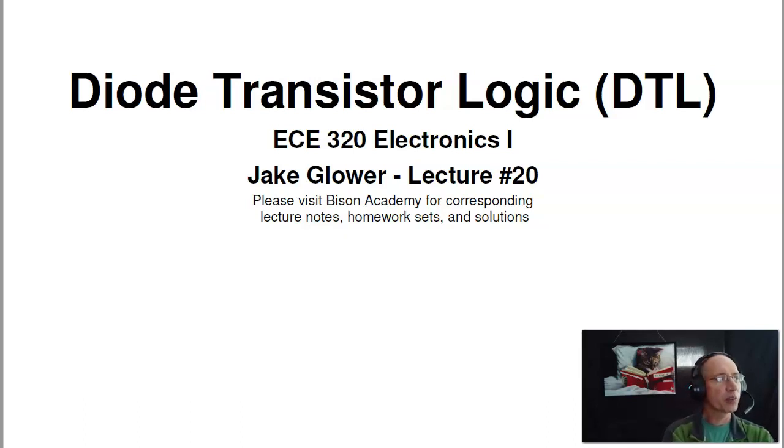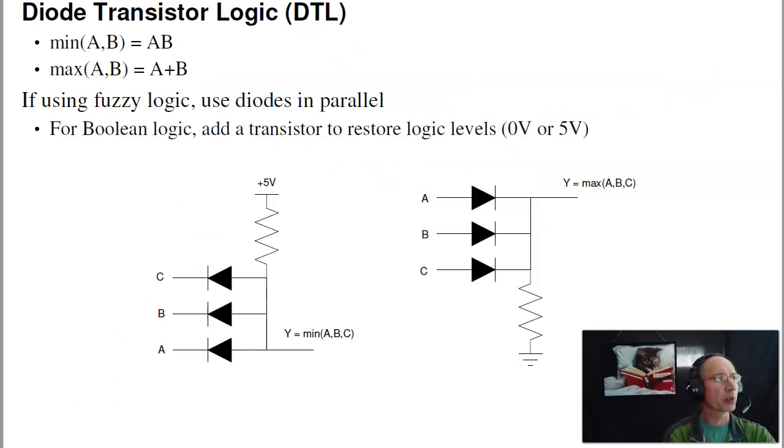Now what we've looked at before is using diodes to implement fuzzy logic. That's logic where you can have multiple levels. Now we're going to go back to the black and white world of the Sith, where you have only two outputs, true or false. Previously with fuzzy logic, we were looking at using diodes to do a min function or a max function. And a min is kind of like logical AND, the minimum of the three functions. It's only true if all three are true.